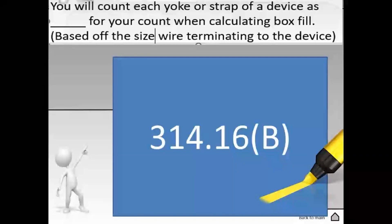Then a few more lines down, I want you to highlight the words based off the largest conductor connected to the device. And then of course, go back up to part four and highlight the heading. So your highlighting will read device or equipment fill, each yoke or strap, double volume based off the largest conductor that's terminated to the device.